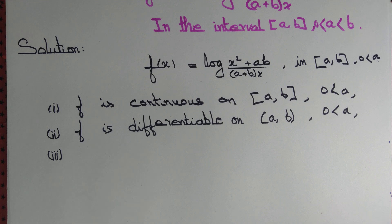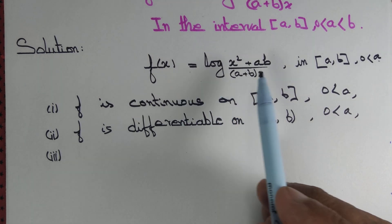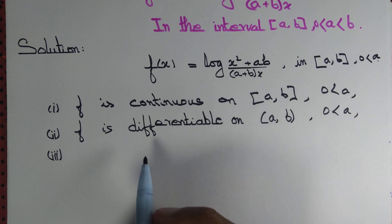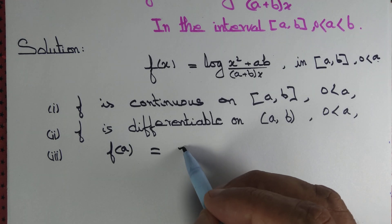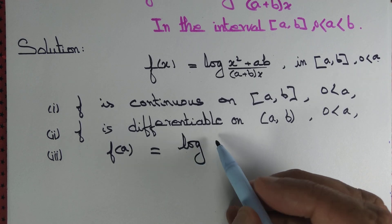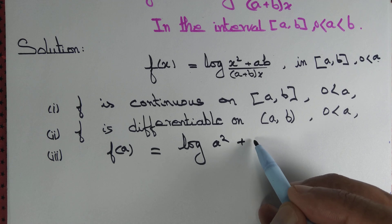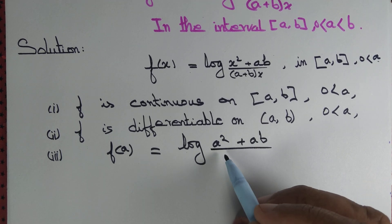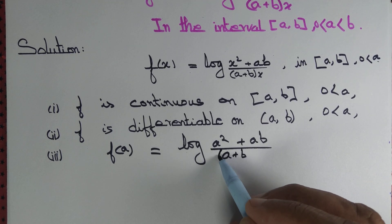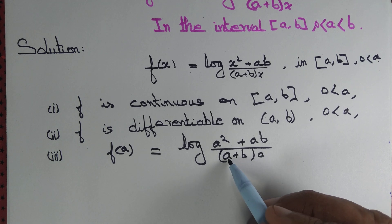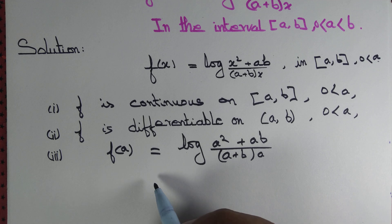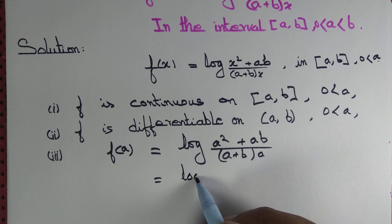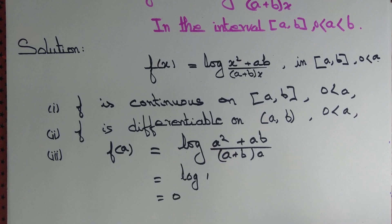The last criterion: the value of the function at the endpoints must be the same. f(a) = log of (a² + ab) divided by (a + b)·a. The numerator a² + ab equals a(a+b) and the denominator is also a(a+b), so this equals log(1) = 0.